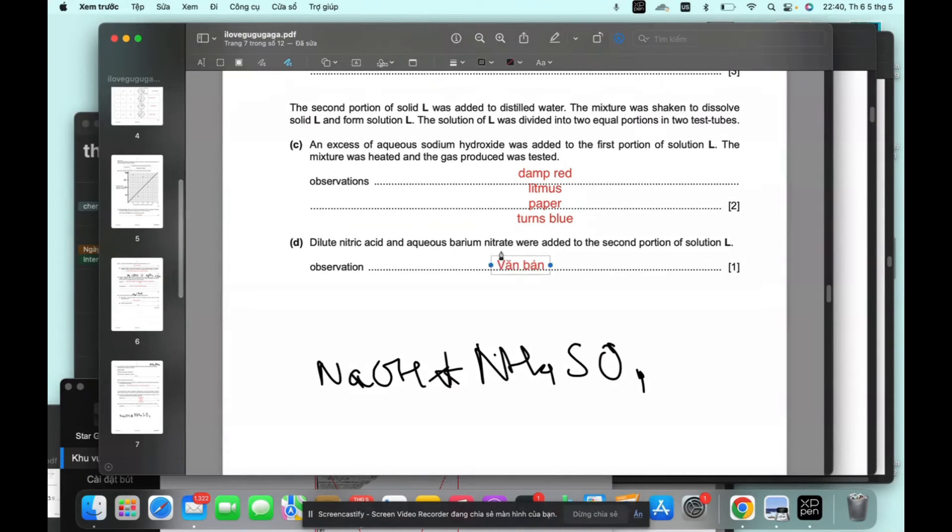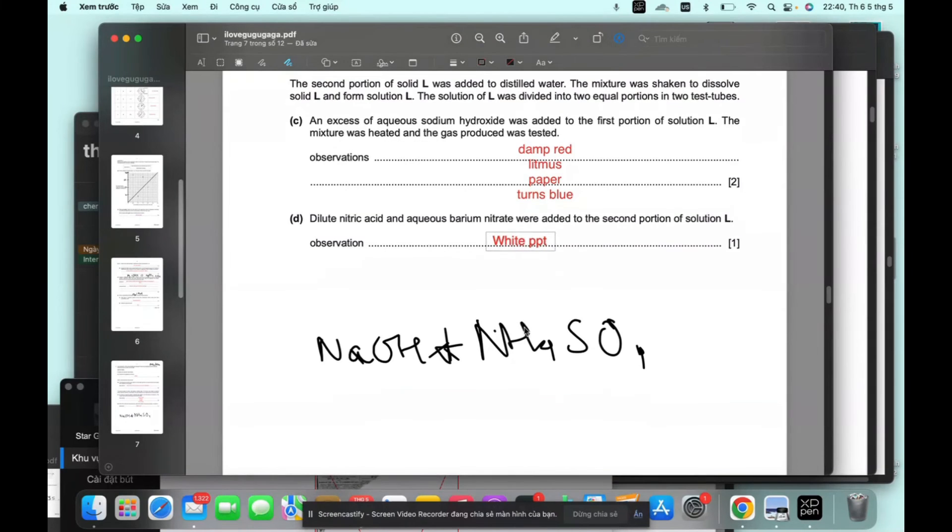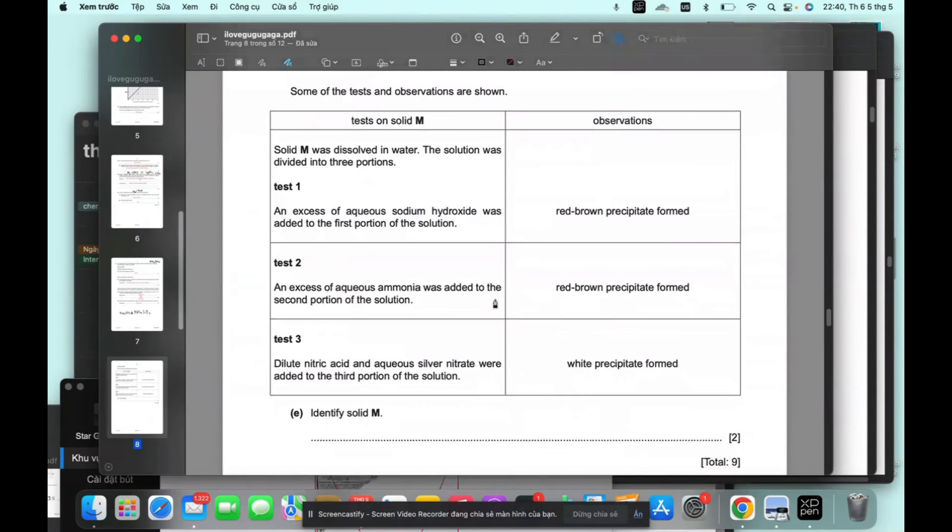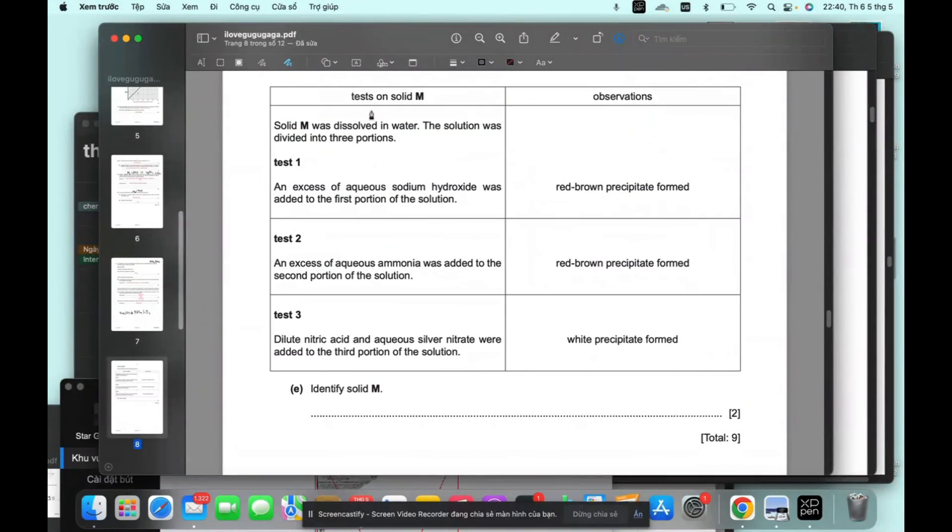The dilute nitric acid, barium nitrate, it will create a white precipitate. Because as we know, barium sulfate is a insoluble white precipitate. Okay.